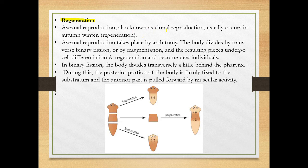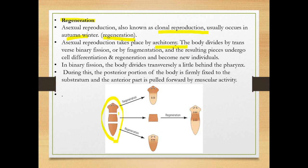Asexual reproduction, also known as clonal reproduction, occurs mostly in autumn and winter season. Asexual reproduction takes place by architomy. Architomy means cutting — the body divides by transverse binary fission or by fragmentation. The resulting pieces undergo differentiation and regeneration, becoming new individuals.